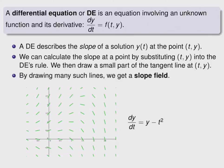By drawing many such lines, we get what's called a slope field. Here's an example in which each of these green line segments is a small part of a tangent line to one of the solutions to this differential equation.